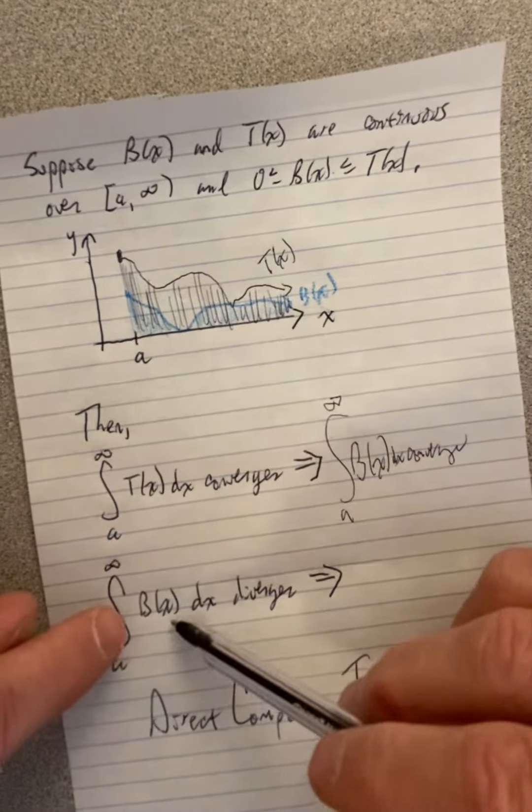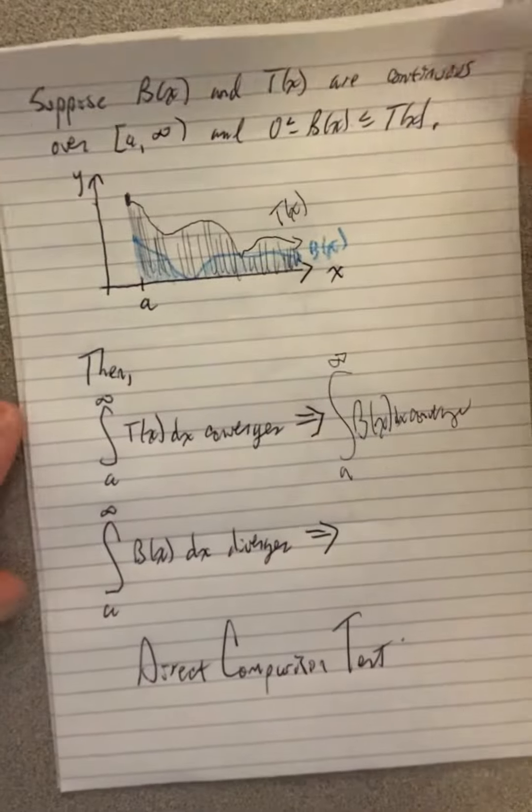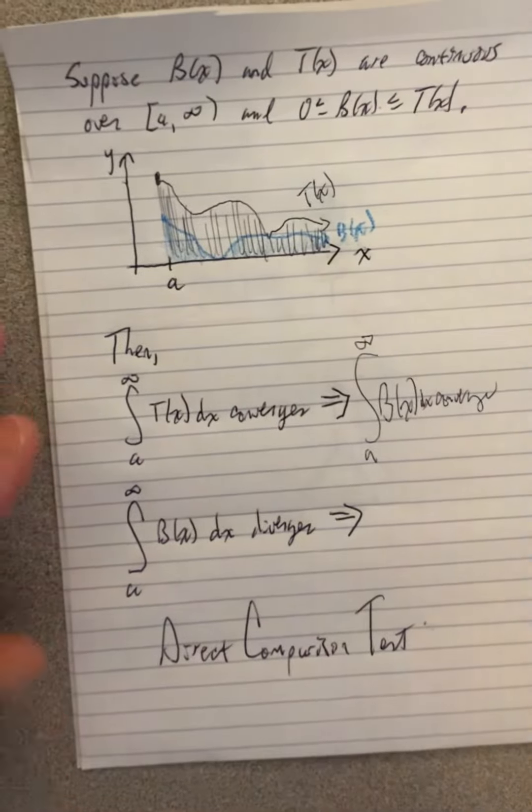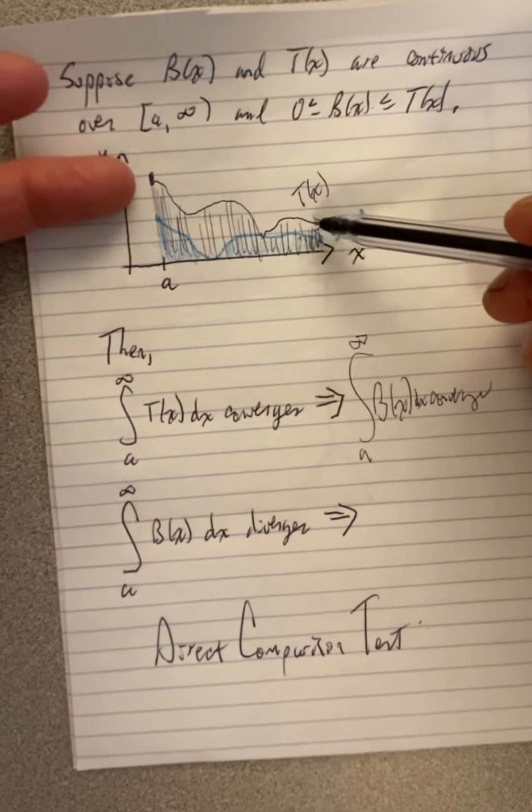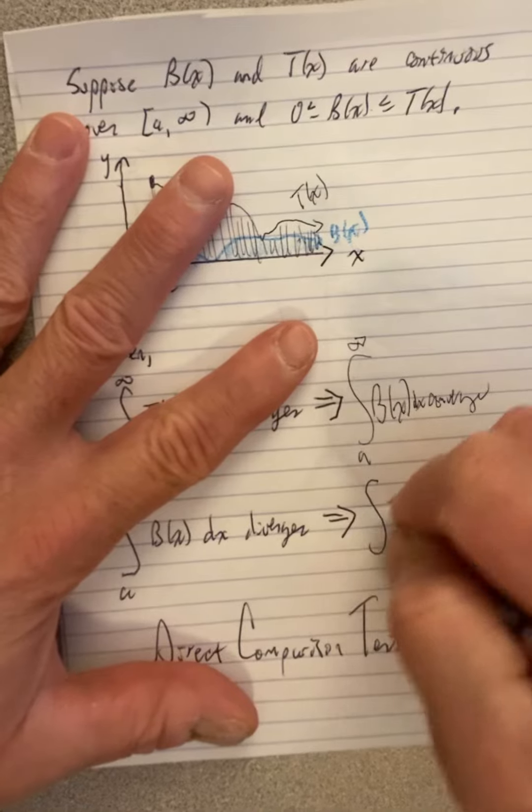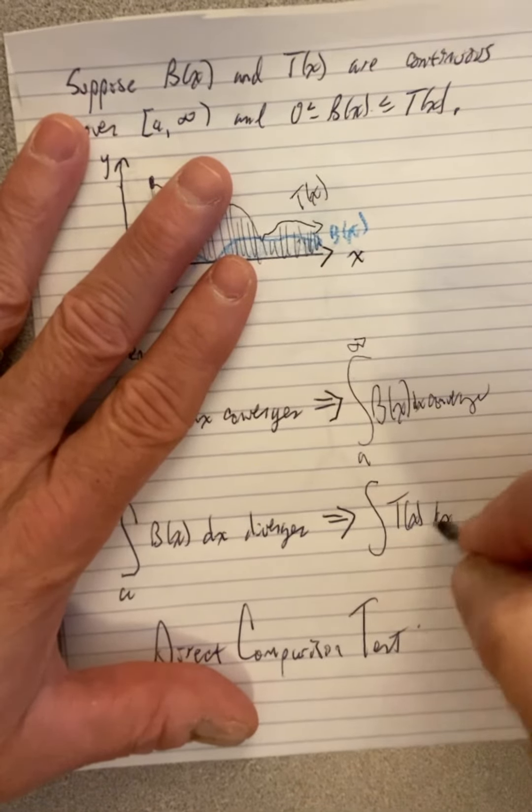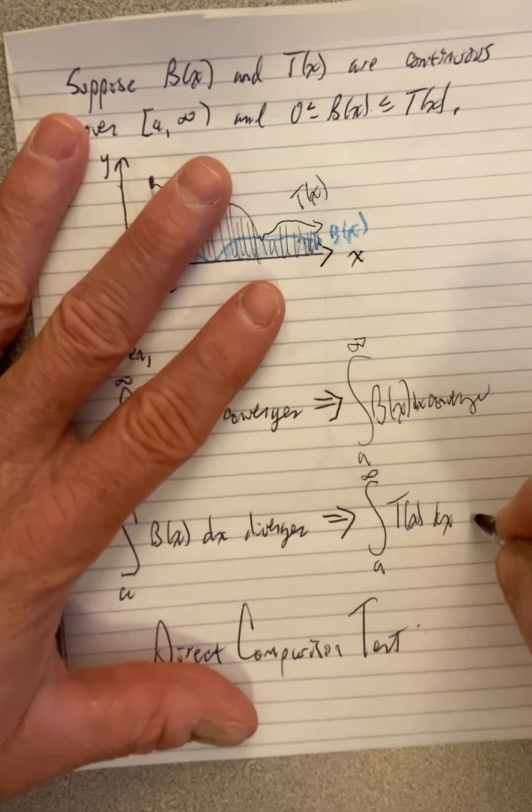Well, what about if the bottom function, this blue area, what if it diverges? What if it's going to infinity? What can we conclude about the top function? Well, clearly, if the blue area, which is smaller than the black area, is diverging to infinity, then the black area, the top function's area under its curve, will also diverge.